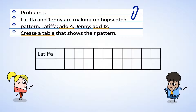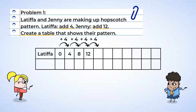Let's start with Latifah's pattern. 0 plus 4 is 4. Next, 4 plus 4 is 8. 8 plus 4 is 12. And if we keep adding those 4s, we get 16, 20.